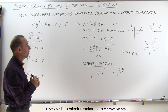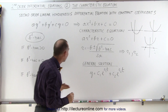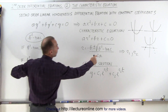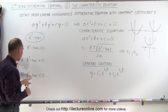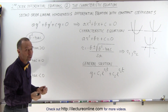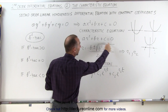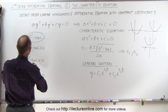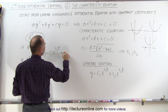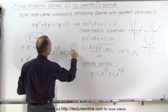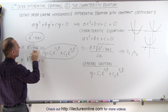We do have to realize this is the general solution only if R1 and R2 are two real roots — because it's different if the quantity B squared minus 4AC equals zero, which gives a single root, or if B squared minus 4AC is less than zero, which gives imaginary roots and a different solution. So if B squared minus 4AC is greater than zero, we have two real roots and Y equals C1e to the R1t plus C2e to the R2t.